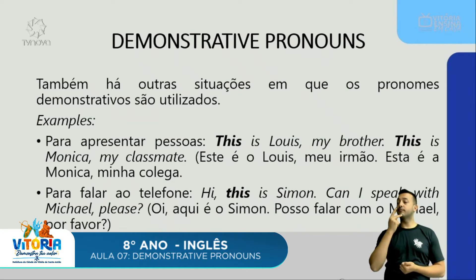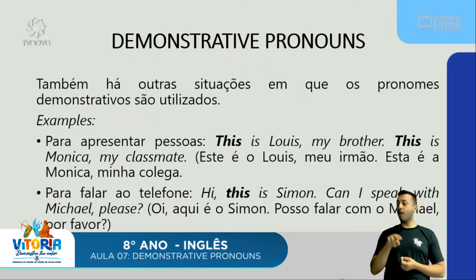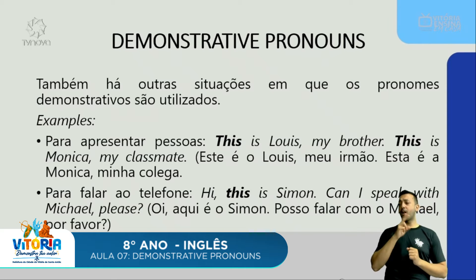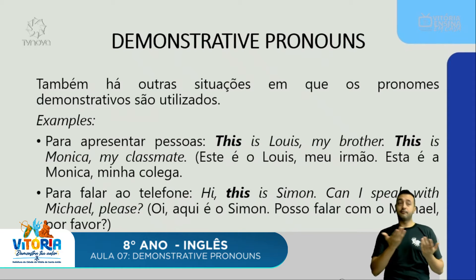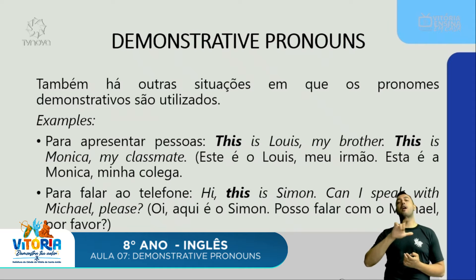Se eu estou falando ao telefone, como é que eu falo? Exemplo: 'Hi, this is Simon. Can I speak with Michael, please?' — Oi, aqui é o Simon. Posso falar com o Michael, por favor? Em inglês 'aqui' é 'here', mas nessa situação, se eu quero dizer 'aqui é o Simon' ou 'esse é o Simon', o pronome utilizado é o 'this'.